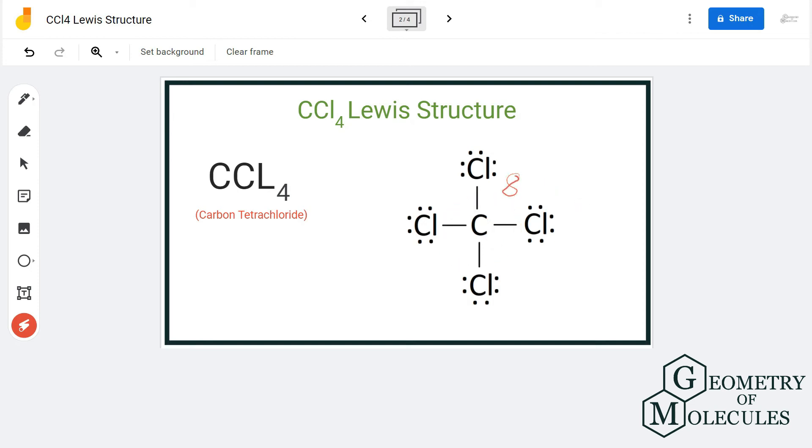As carbon is sharing all four valence electrons with four chlorine atoms, it has a complete octet. So this is the Lewis structure for CCL4.